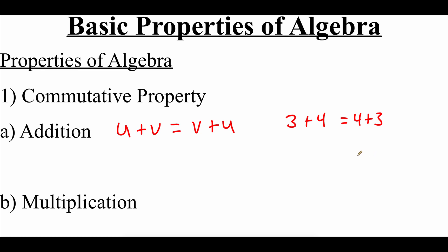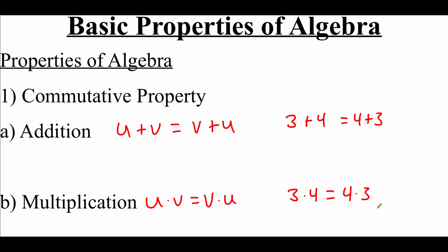The same thing holds true for multiplication. We could take u times v and get the same answer as v times u. So 3 times 4 is 12, and 4 times 3 is also 12.